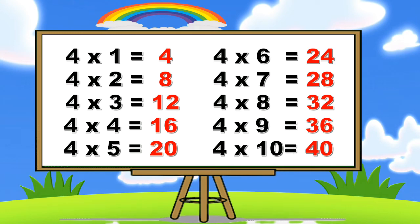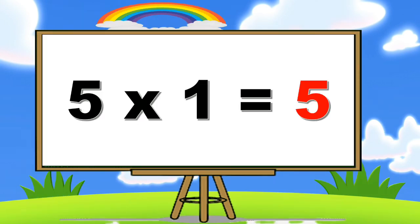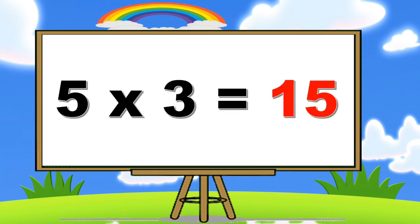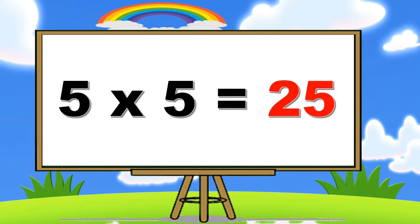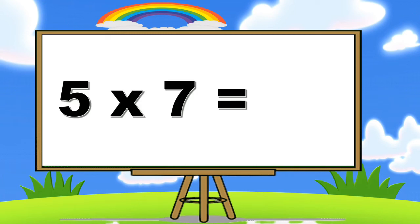My friends! Table of five. Five ones are five. Five twos are ten. Five threes are fifteen. Five fours are twenty. Five fives are twenty-five. Five sixes are thirty. Five sevens are thirty-five.